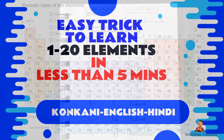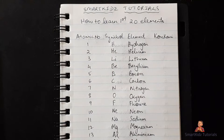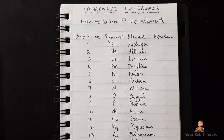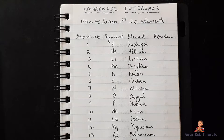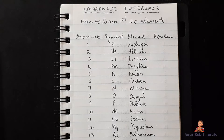Hello students and welcome to Smart Kids Tutorials. In this video we will try to learn the first 20 elements of the modern periodic table. First we'll do it in Konkani, and then we'll do it in English and Hindi. The Konkani part is for those students who find it easier to understand in Konkani — that includes students from 9th, 10th, 11th, 12th and even higher classes who find it difficult to memorize the first 20 elements.